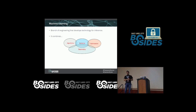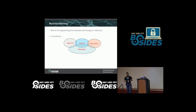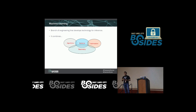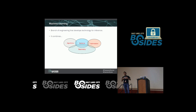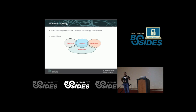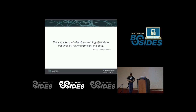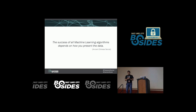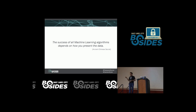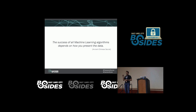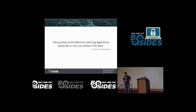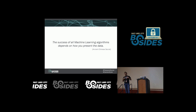A quick definition of machine learning: it is a branch of engineering that develops technology for purposes of inference. It combines algorithms, statistics, and optimization. For me, the critical component is viewing this through a geometric lens. There is an ancient Chinese saying that the success of all machine learning algorithms depends on how you present the data. A lot of the criticism and failure of machine learning algorithms across different domains — security in particular — happens because you don't present the data the right way.